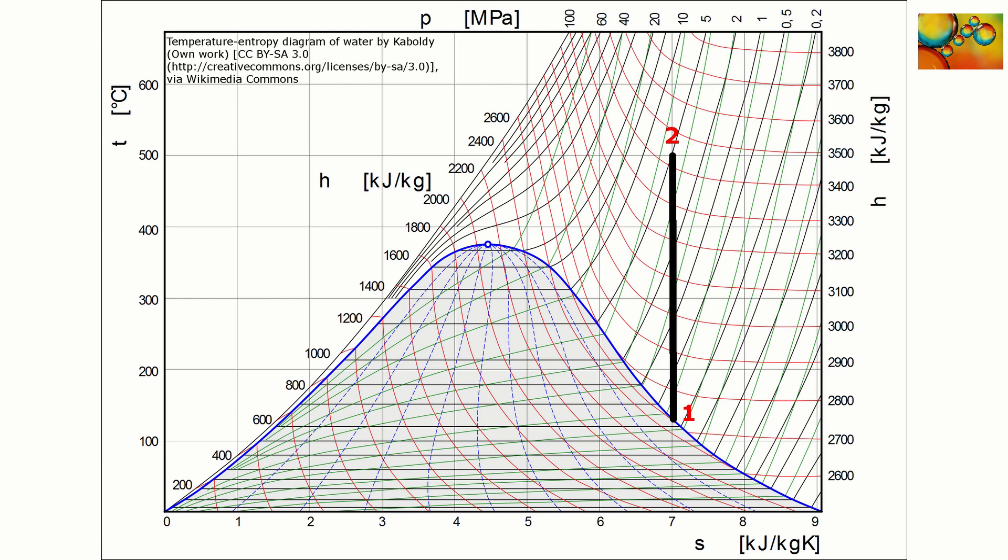An isentropic process is represented by a vertical line like the one shown in these slides. An example would be an adiabatic and reversible compression starting from state 1 and taking the system to state 2.